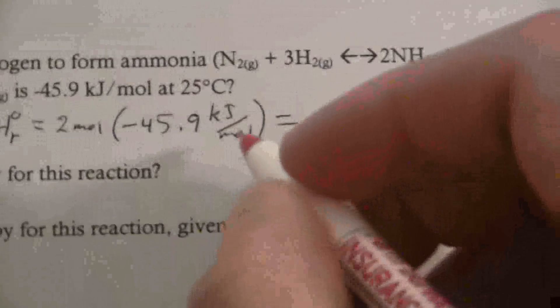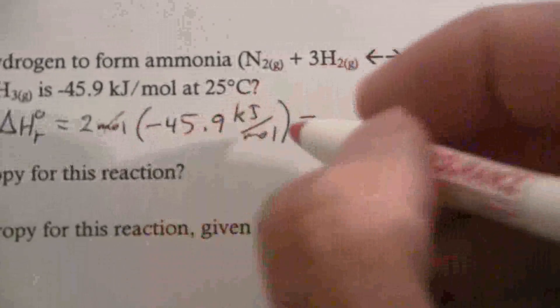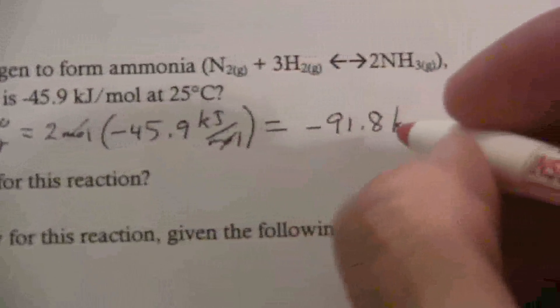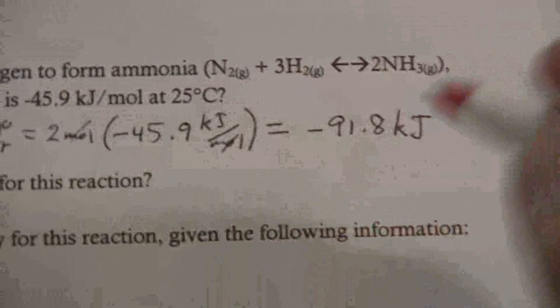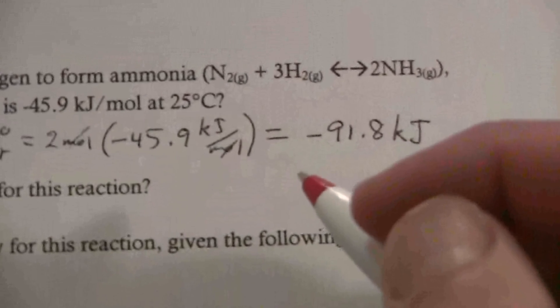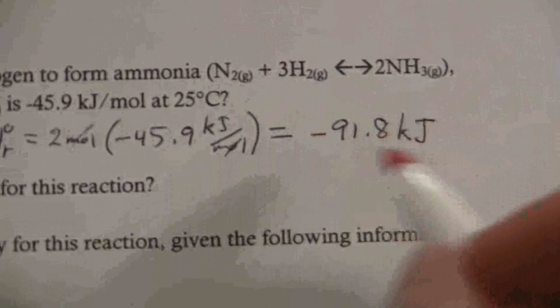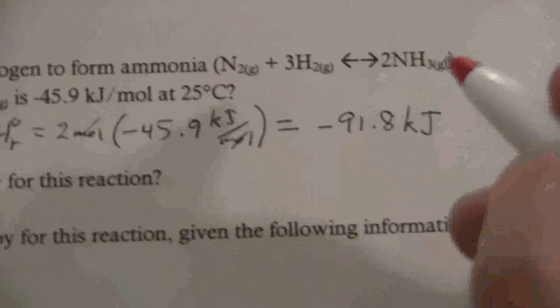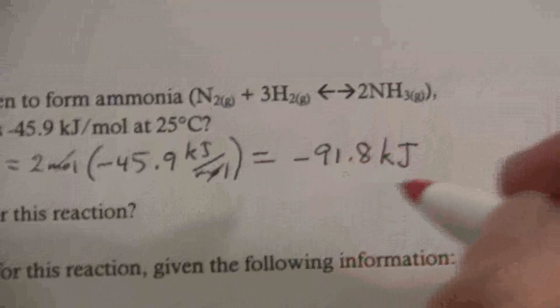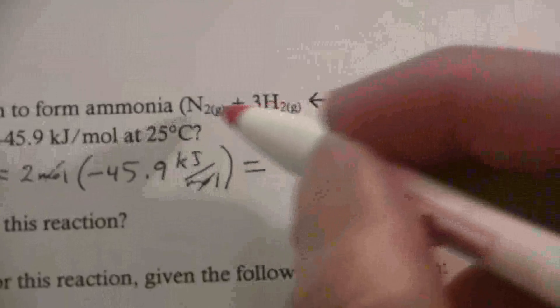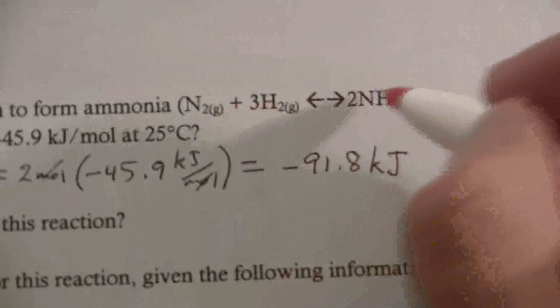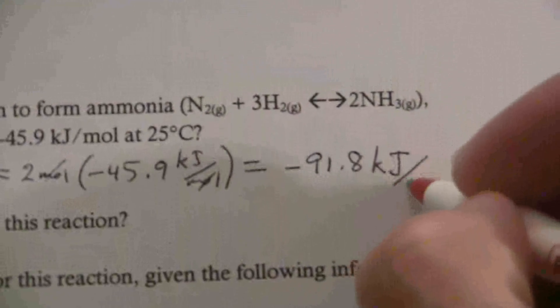And then what I get here is negative 91.8. The units, my moles cancel, and I get kilojoules. So that is the heat of reaction for this particular reaction, and what we could say is it's this many kilojoules, not per mole of the substance, but per mole of this reaction.